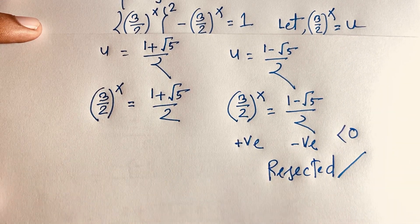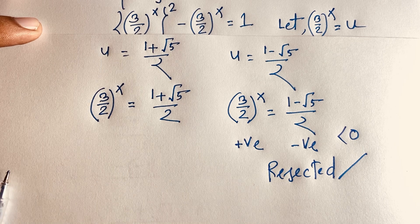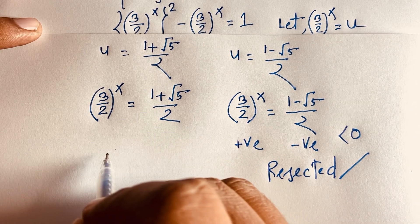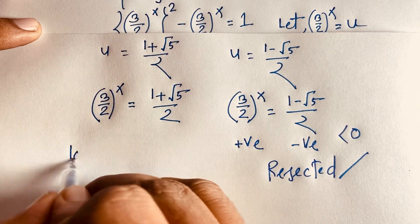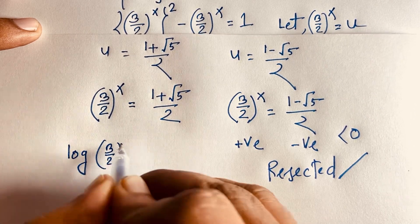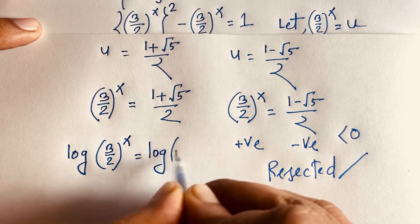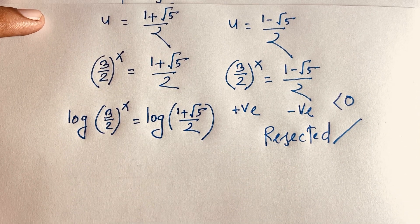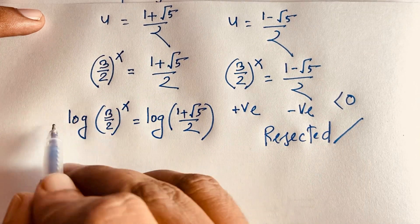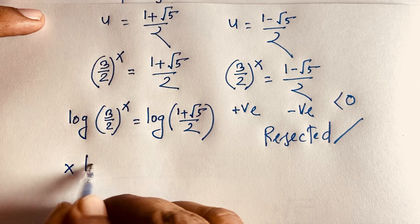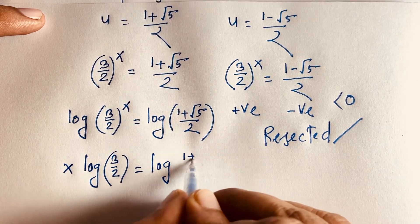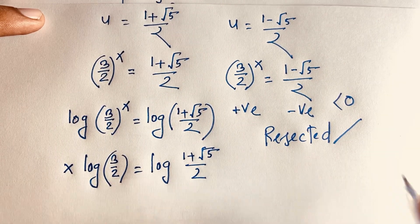So (3/2)^x equals (1 + √5)/2. To solve for x, I apply log to both sides: log of (3/2)^x equals log of (1 + √5)/2. Bringing the exponent in front gives x times log(3/2) equals log((1 + √5)/2).